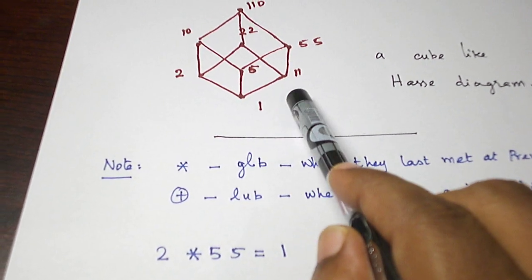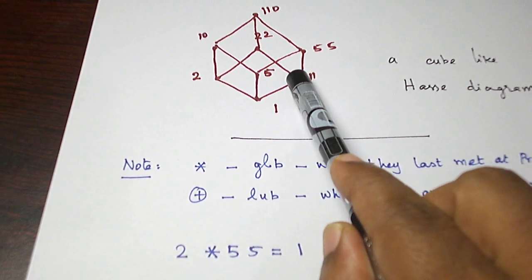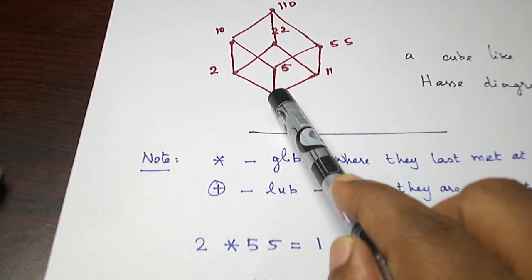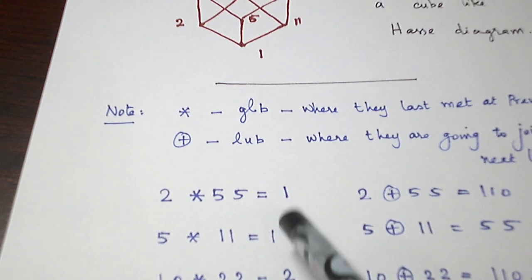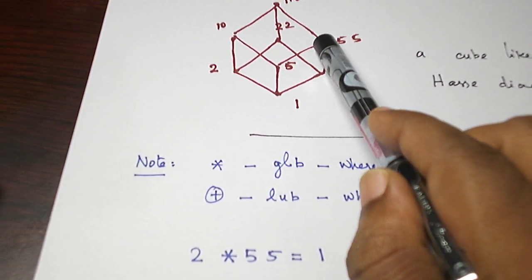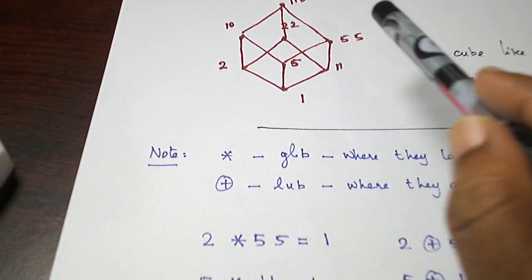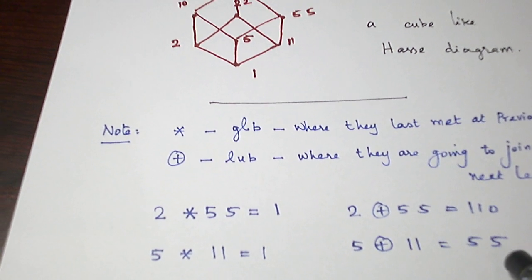5 and 11 if you take. 5 and 11 last met at 1. 5 star 11 is 1. 5 and 11 are going to join at 55, so 5 plus 11 is 55.